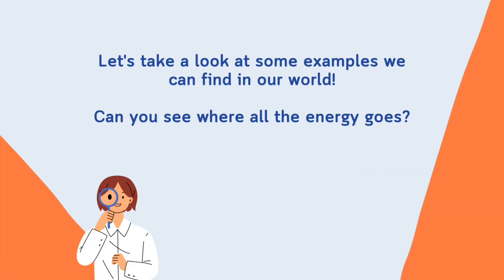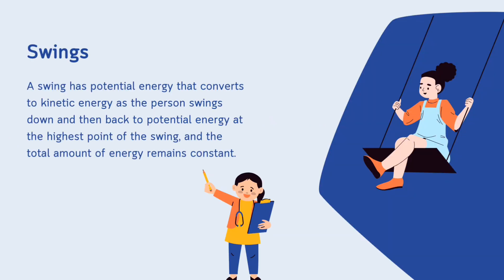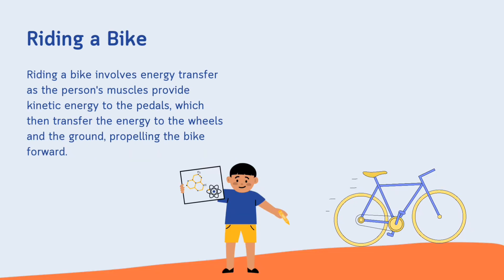Now let's look at some examples we can see in our daily life. First, we will illustrate with an example of a swing. As you know, children visit the playground for swings. A swing has potential energy that converts to kinetic energy as the person swings down, and then back to potential energy at the highest point of the swing. The total amount of energy remains conserved.